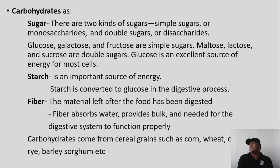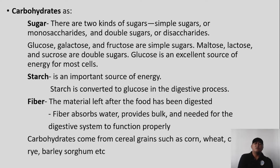As carbohydrates, sugar has two kinds. The first is simple sugar or monosaccharides, and the other is double sugars or disaccharides. Examples of simple sugars or monosaccharides are glucose, galactose, and fructose. Examples of disaccharides are maltose, lactose, and sucrose. Glucose is an excellent source of energy for most cells.